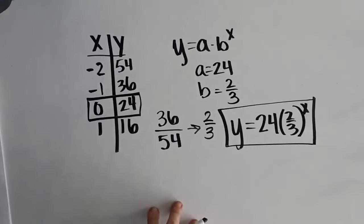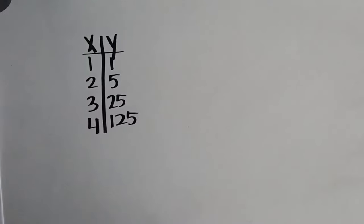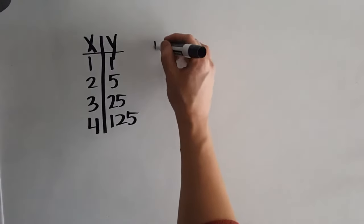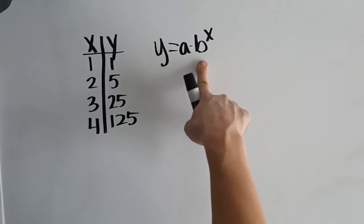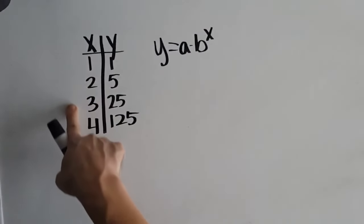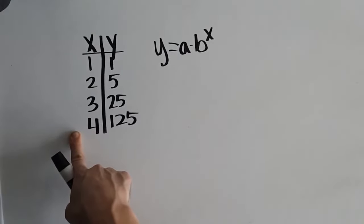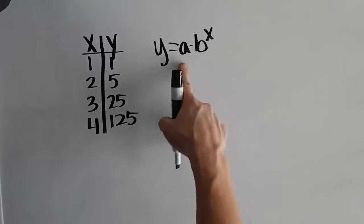Let's take a look at one more where we're missing another piece of information. So we have a table again. We need to identify our initial value and our base. Well, when I'm looking at my table, I don't see an x value of 0. So, so far, I don't really have my initial value. So I'm going to have to wait on that one.